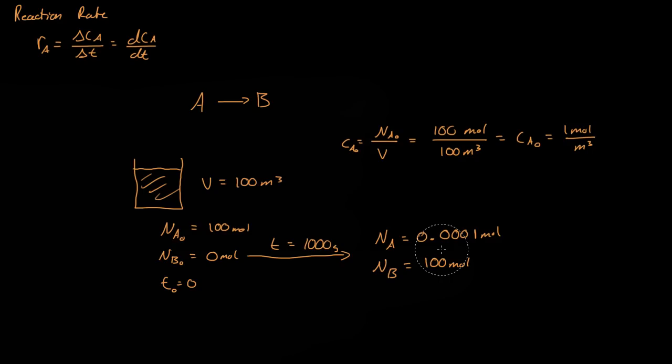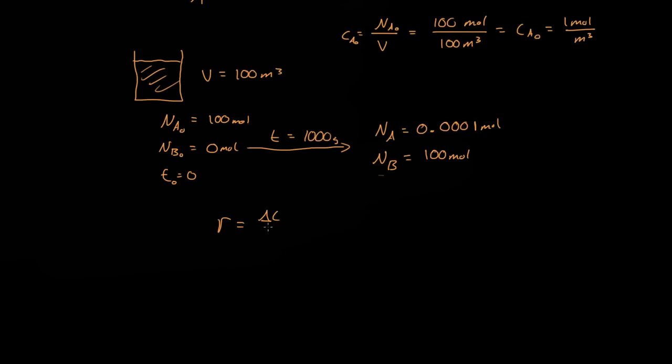So now, what's the chemical reaction rate? R is equal to the change in the concentration over the change in time. So we're going to do species A. So now, what's the concentration of A now? Well, that's just the number of moles of A, the moles of A, divided by the volume. And that's just basically equal to zero. So what we get, we have zero minus 100 moles per meter cubed, all divided by 1,000 seconds. So that is equal to a negative 0.1 moles per second meter cubed. So that's the reaction rate of A.